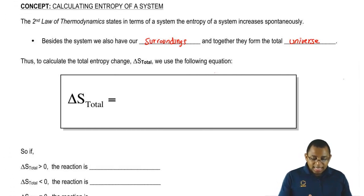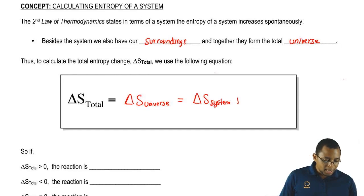Thus, to calculate the total entropy change, ΔS_total, we use the following equation. ΔS_total is the same thing as ΔS_universe, and that equals ΔS_system plus ΔS_surroundings.